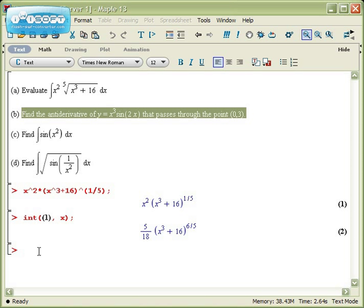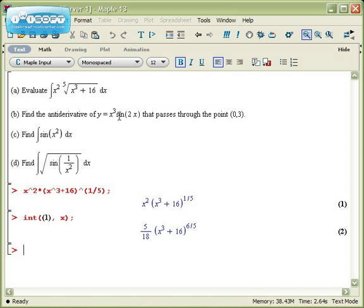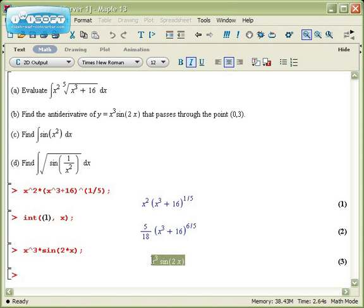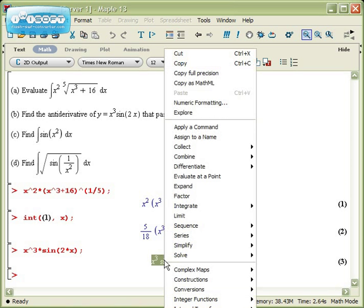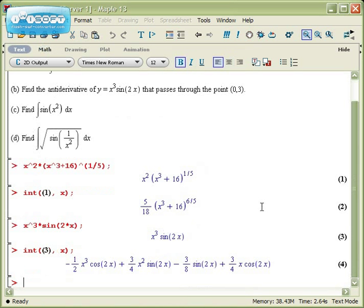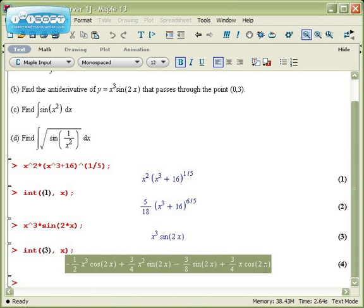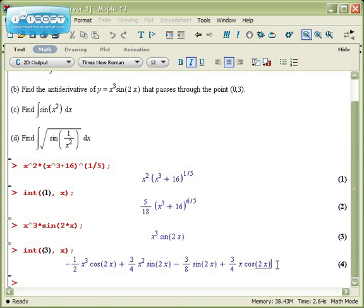For example, let's take part b. Part b says to find the antiderivative of x cubed times sine of 2x. Well, let me first get x cubed times the sine of 2x entered. To get an antiderivative, that's just what integration is. So I'm going to go and select this, right click, and choose integrate with respect to x. And that right there happens to be an antiderivative. But it's not the one I'm looking for.